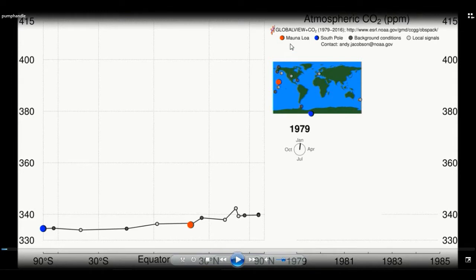The red dot here is the Mauna Loa site which is in Hawaii, and the blue dot here is a site on the south pole.